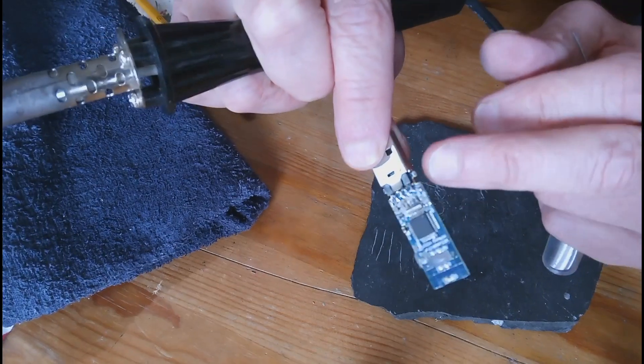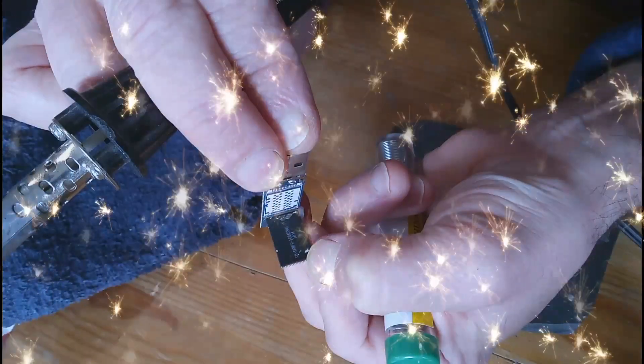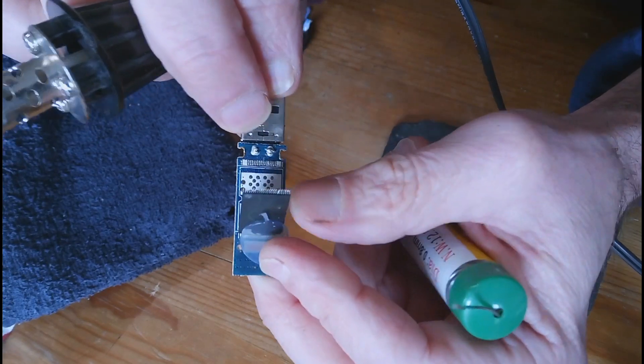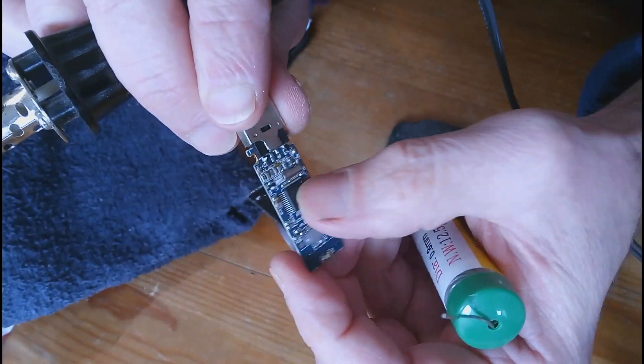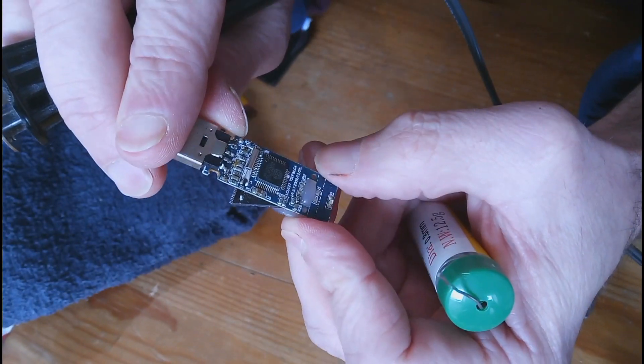But that's most likely what the case is for those of you with bent USB drives. I believe that's the memory chip right there, and I believe that's the processor chip.